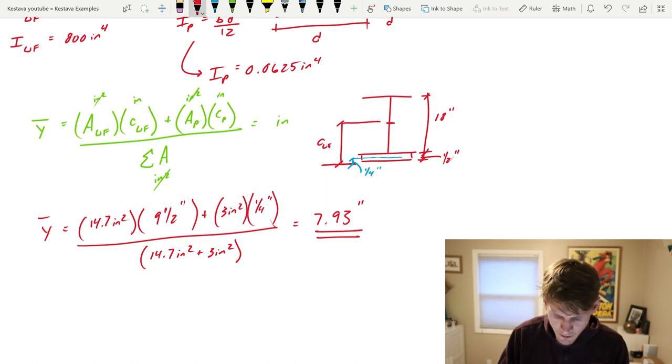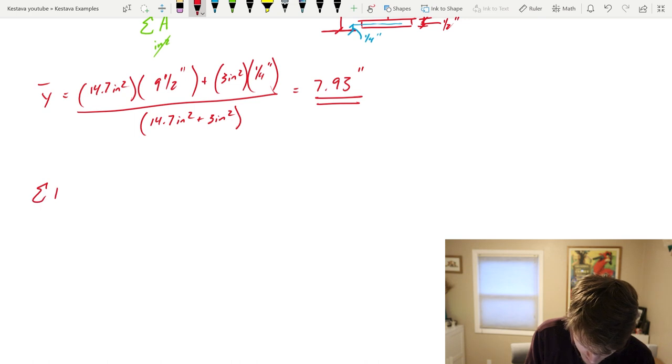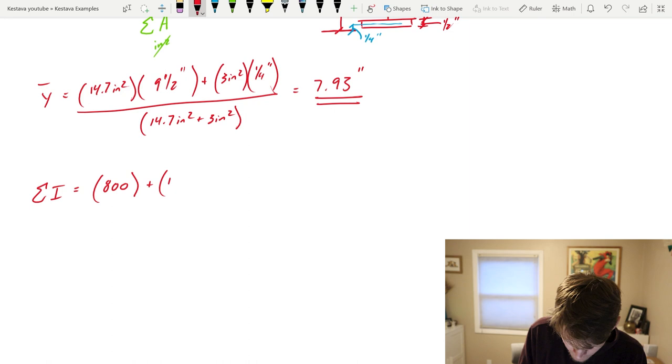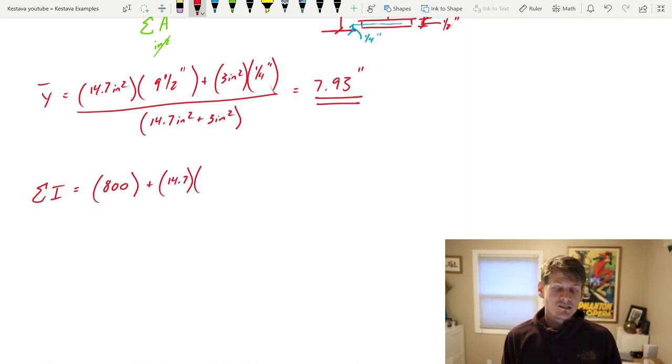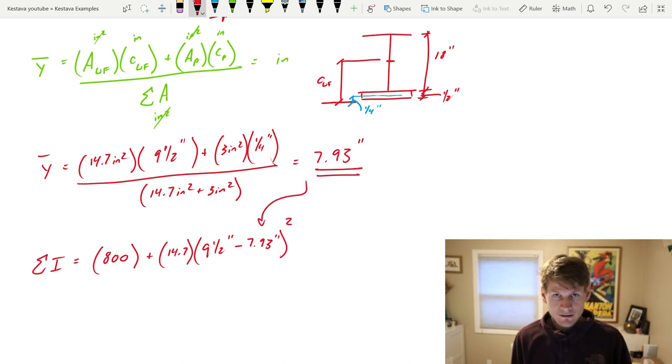Now we can solve d for both of our components. And I'm going to do that within the equation to solve for the summation of your moment of inertia. Summation I equals, you're going to start with your moment of inertia of the wide flange which is 800 plus the area of your wide flange 14.7 inches squared. D is the distance from the centroid of your object to the centroid of your system or that y bar.